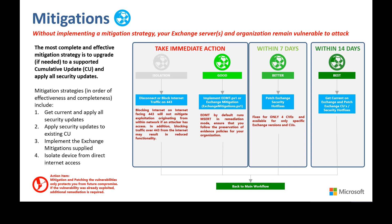Mitigation is necessary to prevent future exploitation of these vulnerabilities. Microsoft provides a variety of methods to mitigate the threat. The most complete and effective mitigation strategy is to fully patch to the most recent Exchange Server cumulative update. All other mitigation approaches are only partial. These vulnerabilities are being exploited in the wild by multiple malicious actors. Once you have applied a mitigation, that does not remove the need to investigate and possibly remediate the server if it had been previously compromised.